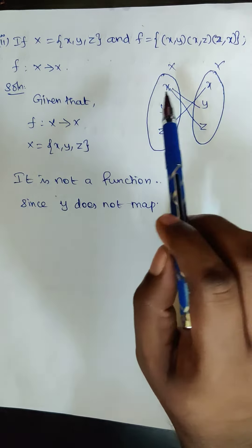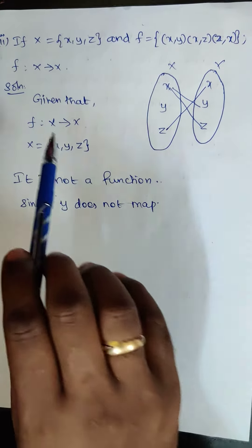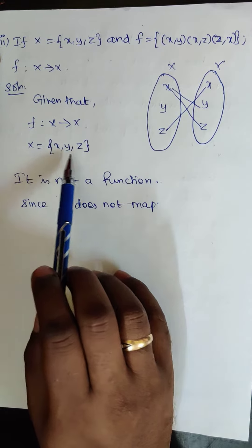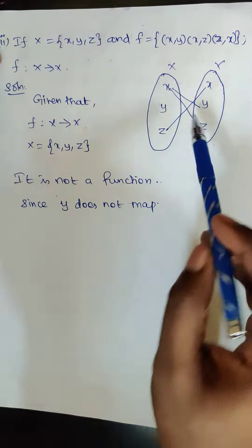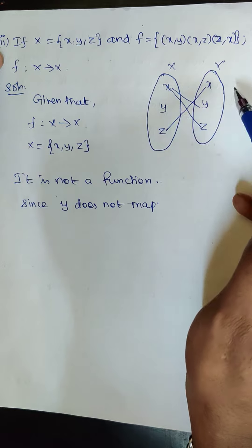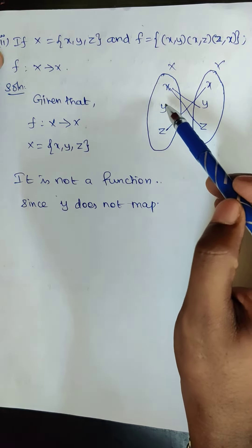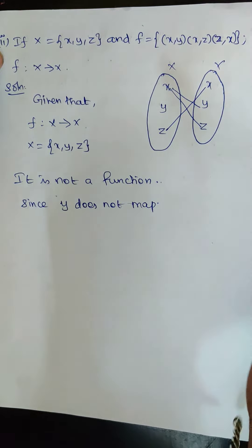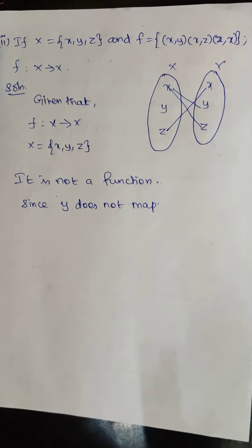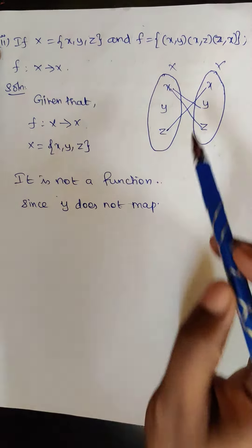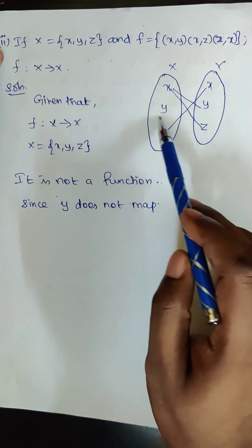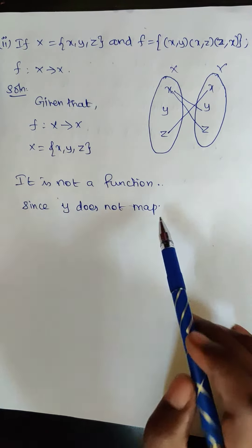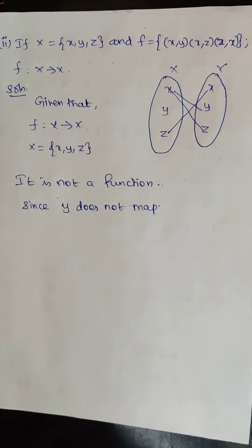Given that the function is from X to X, and X equals {x, y, z}, see here — the domain element y is not mapping to anything. Since y does not map, this is not a function. So it is not a function since y does not map. This is the answer for this sum.